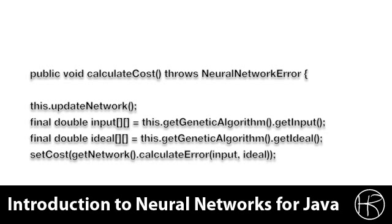Just as was the case with the traveling salesman problem, we must also implement the calculate cost and mutate functions. Here you see the calculate cost. The calculate cost for a neural network is relatively simple.